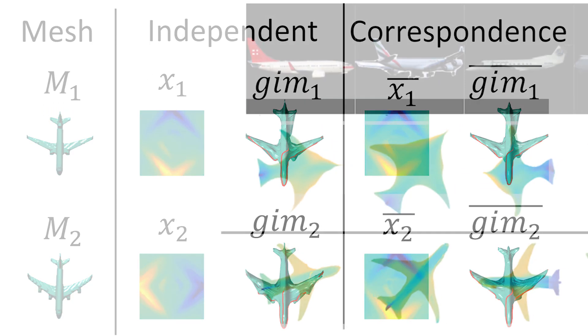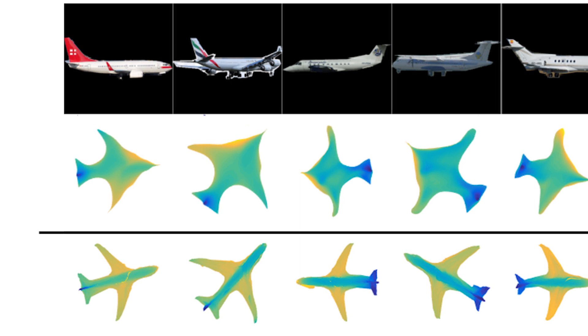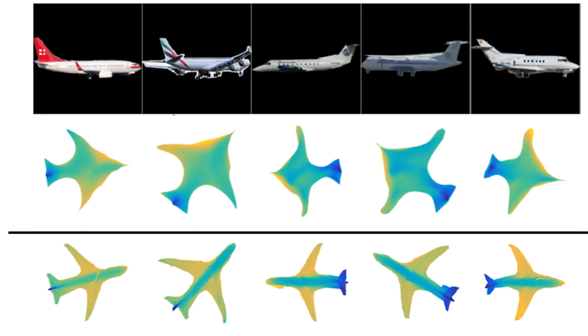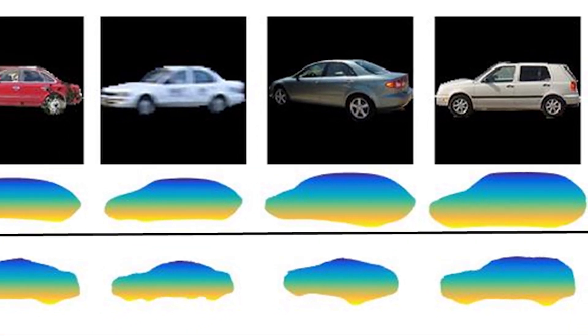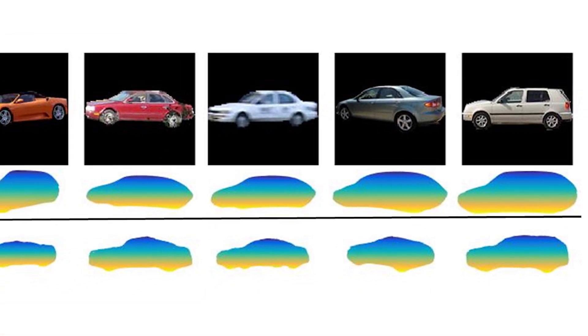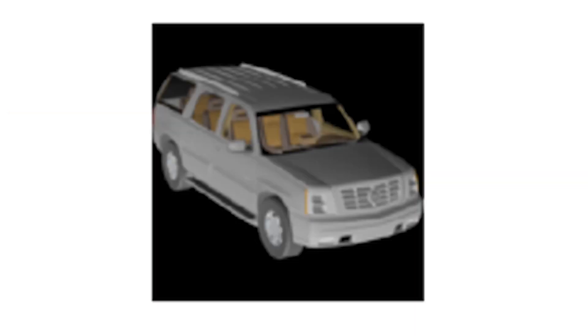We just keep showing it a lot of different shapes. Basically it learns patterns like doors, wheels, handles. Now the question is: when the machine is shown a new image of a 2D object, can it predict the 3D?